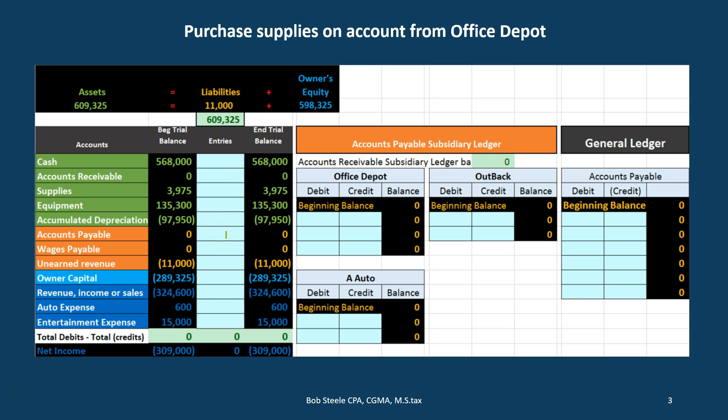We're going to be focusing on accounts payable. Whenever we look at the backup for accounts payable, we usually think of the general ledger. The general ledger is what we've traditionally looked at — if we want to know more detail about an account, we take a look at the general ledger. The general ledger will give us detail by date. We're going to show the general ledger just for accounts payable here. We are then going to look at the subsidiary ledger, which is the new thing we're examining — what does it do over and above the general ledger, and what makes it necessary?